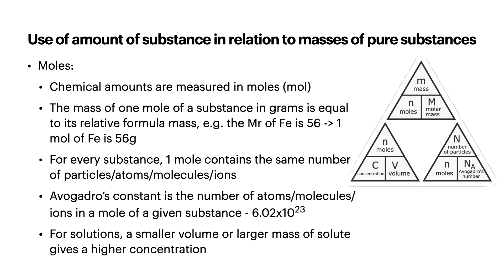These are the main equations that you will need, shown in a little triangle on the right-hand side. The bottom-left one is purely for solutions, the top one is more for solids, and then the bottom-right one is if you've been given the number of particles. It has a beautiful Avogadro's number — Avogadro's constant — which is the number of atoms, molecules, or ions in a mole of a given substance. Within one mole of any substance, there are 6.02 × 10²³ atoms, no matter what the substance is.